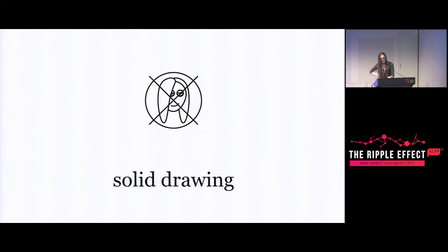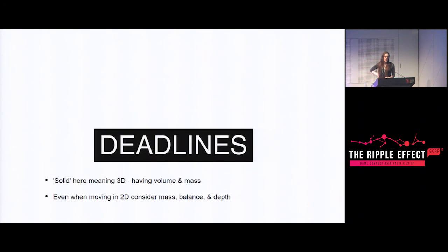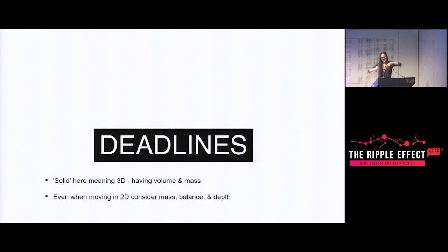Solid drawing. What this means in the context of the book is solid as in 3D, not solid as in good. Essentially, remember to think about depth, mass, and volume. Even in 2D animation - I see this in some games where they have a 2D character rig with fixed joints that are always the same length and it just looks really unnatural because they're keeping everything in a single plane. Even when you're doing 2D animation, allow for stuff to have some volume, mass, and depth, and you'll open up a lot more expressivity.